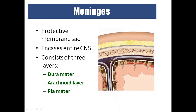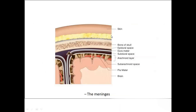The membranes covering the brain are called meninges, consisting of three layers: dura mater, arachnoid mater, and pia mater. The space above the dura mater is the epidural space. The space below the dura mater is the subdural space. Below the arachnoid mater is the sub-arachnoid space. Below the meninges is the pia mater, and then the cerebral cortex with its sulci and gyri.